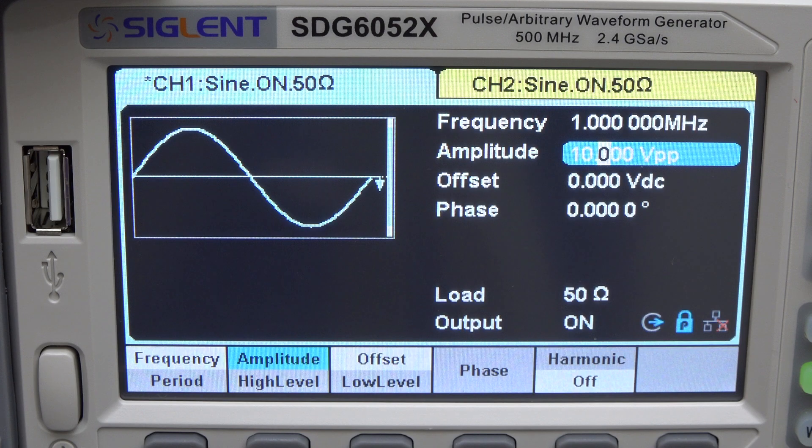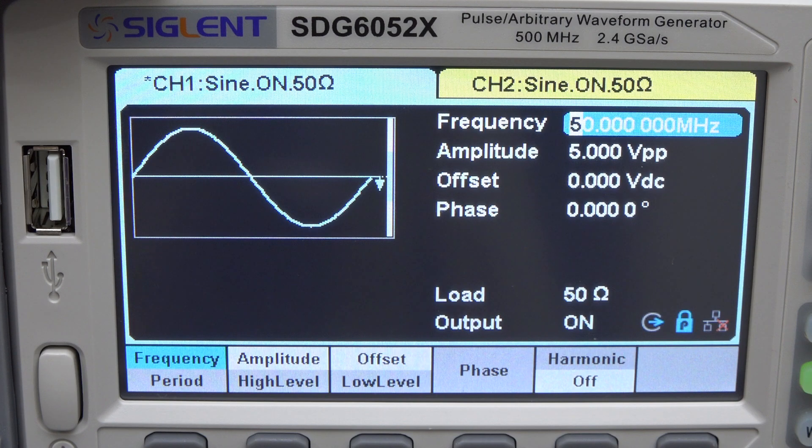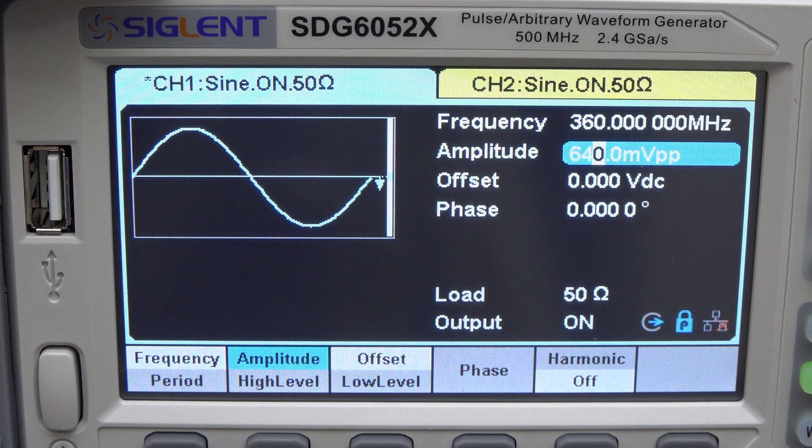Also, at different frequencies you get different maximum output voltage swings. For example, at 1MHz you can get up to 10V peak to peak into a 50 ohm load. At 50MHz it drops down to 5, and beyond 360MHz it drops down to 640mV peak to peak.